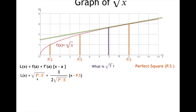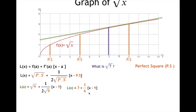So L(x) = √(perfect square) + 1/(2√(perfect square)) · (x − perfect square). Substituting a = 9: L(x) = √9 + 1/(2√9) · (x − 9), which gives L(x) = 3 + (1/6)(x − 9). Substituting x = 7, L(7) ≈ 2.667.